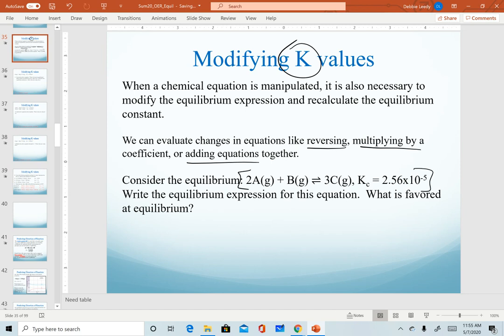We're going to use this main equation as our starting point. To begin with, we're going to write our equilibrium expression. Notice we have a Kc here, so we're going to use concentrations. So we have the concentration of C that is cubed, the concentration of A squared in the denominator times the concentration of B first order. And this is assigned an equilibrium constant of 2.56 times 10 to the minus 5.